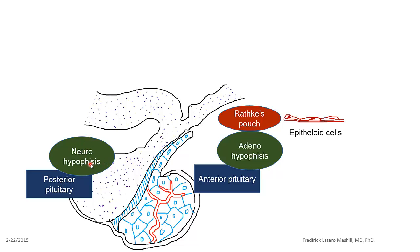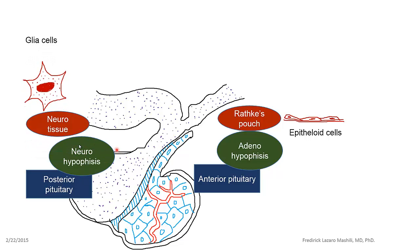This makes the anterior pituitary different from the posterior pituitary, which is also known as the neurohypophysis. From the name you can see that it has a lot to do with neurons. It actually originates embryologically from neural tissue, and that's why the cells that make up the posterior pituitary are actually glial cells — they are neuron-like cells.